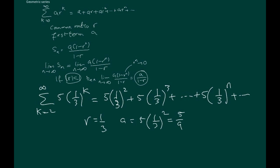Now of course in this particular example, as r is 1/3, it means that it satisfies r being less than 1 clearly, and therefore we say that the series converges to a over (1 minus r), which in this case would mean 5/9 divided by (1 minus 1/3).